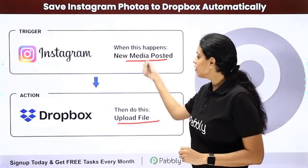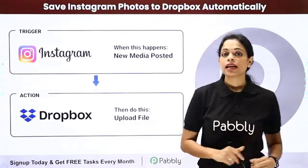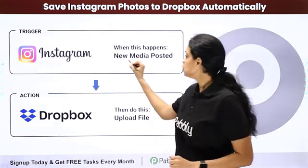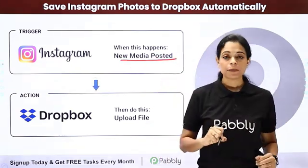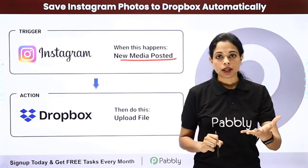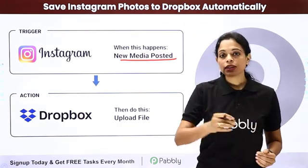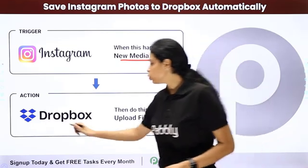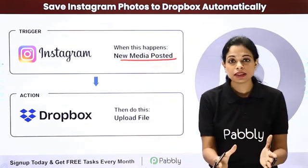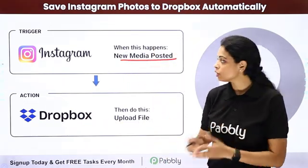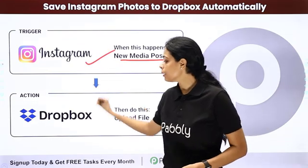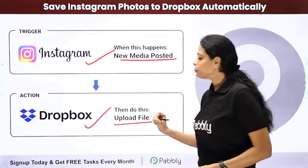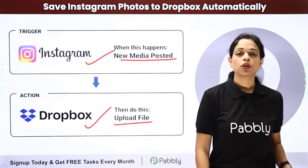Next, we have Instagram and Dropbox. Let's say you have seen some new media post on Instagram or you have uploaded one. Once done, you want this file to also be saved on Dropbox. The same can be done by integrating these two applications — trigger would be Instagram, action application would be Dropbox — and automatically the file would be uploaded on Dropbox.